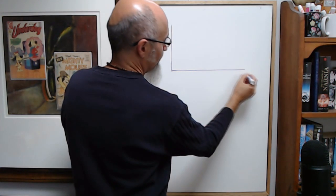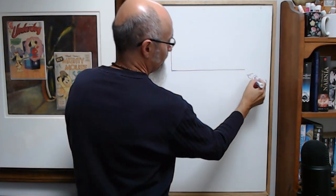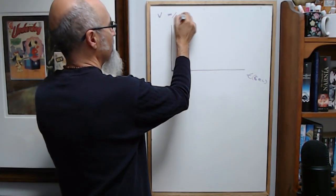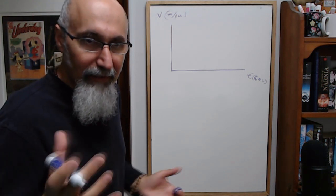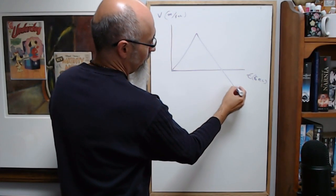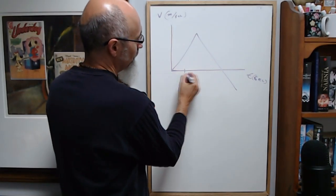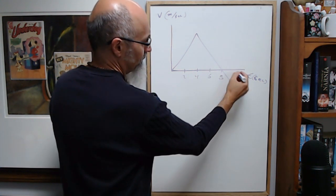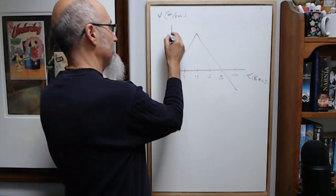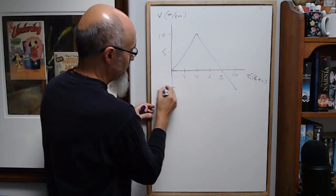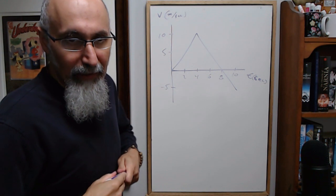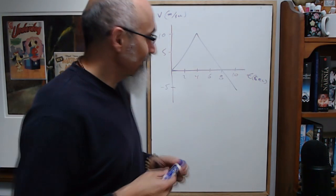Here's a graph: the x-axis is time in seconds — something like 2, 4, 6, 8, 10 seconds — and the y-axis is velocity in meters per second, with values like 5, 10, and negative 5. The student actually sent me the image of the graph, and it went to 12 on the time axis.